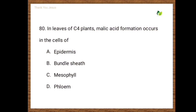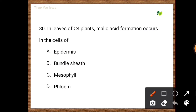Next question: In leaves of C4 plants, malic acid formation occurs in the cells of — options are epidermis, bundle sheath, mesophyll, phloem. The correct option is mesophyll.